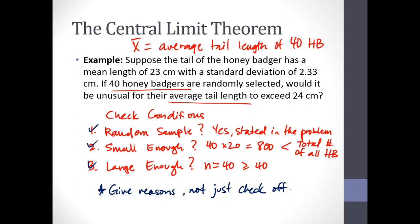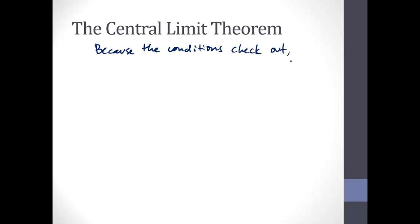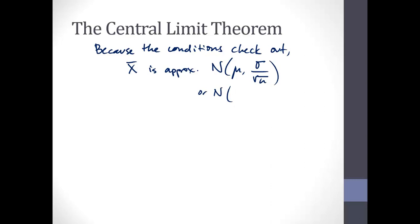Because our conditions have checked out, we know we can say that x-bar is approximately normal with mean mu and standard deviation sigma over the square root of n, which is normal with mean 23 centimeters and standard deviation 2.33 divided by the square root of 40. Because the conditions checked out, the Central Limit Theorem tells us this distribution will be approximately normal, and we can use our usual bag of tricks to answer this question.